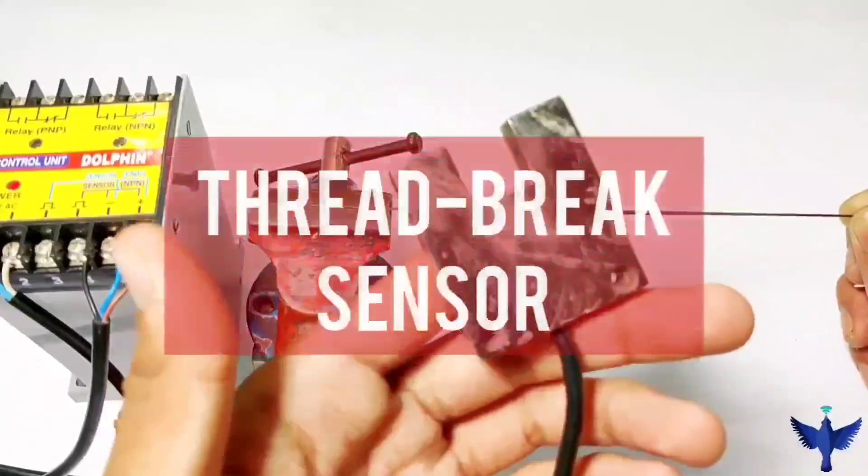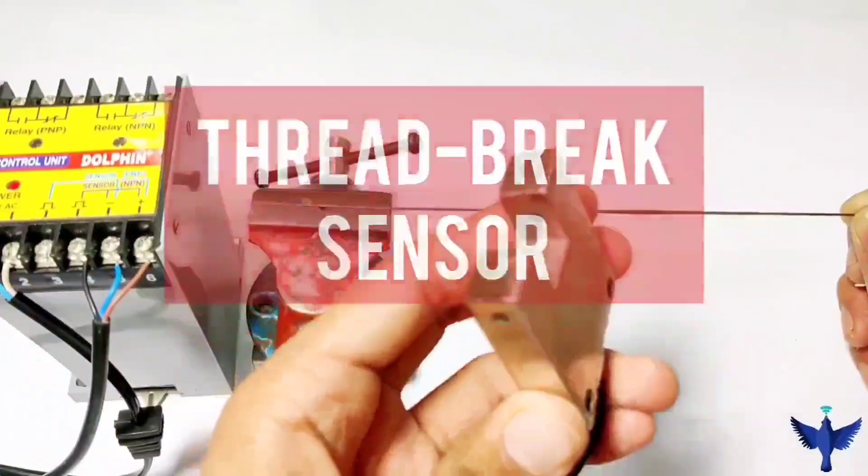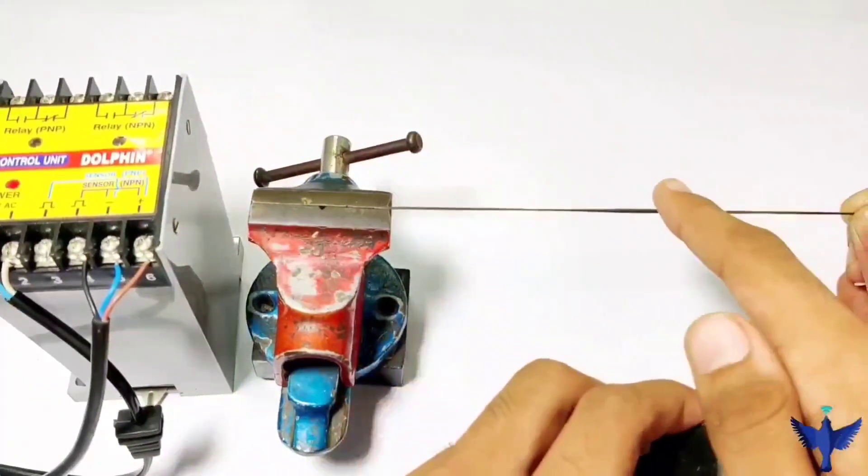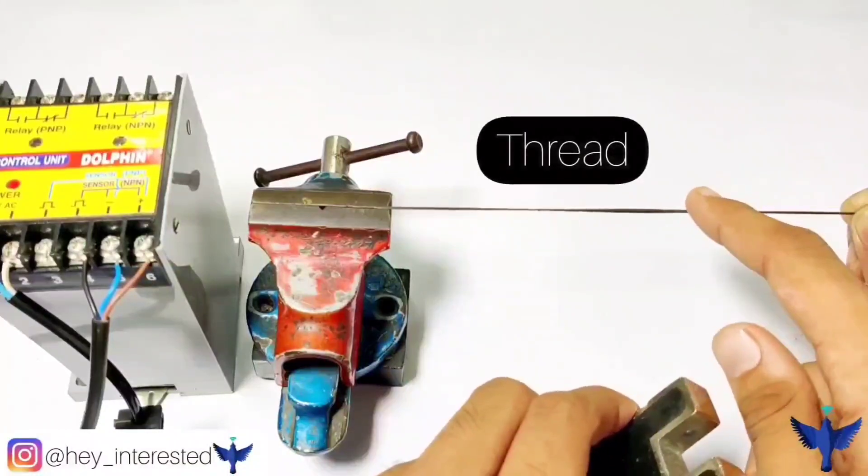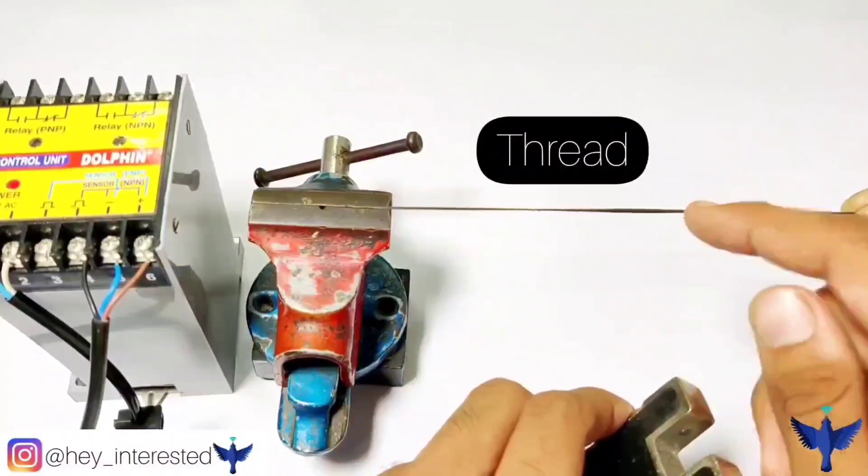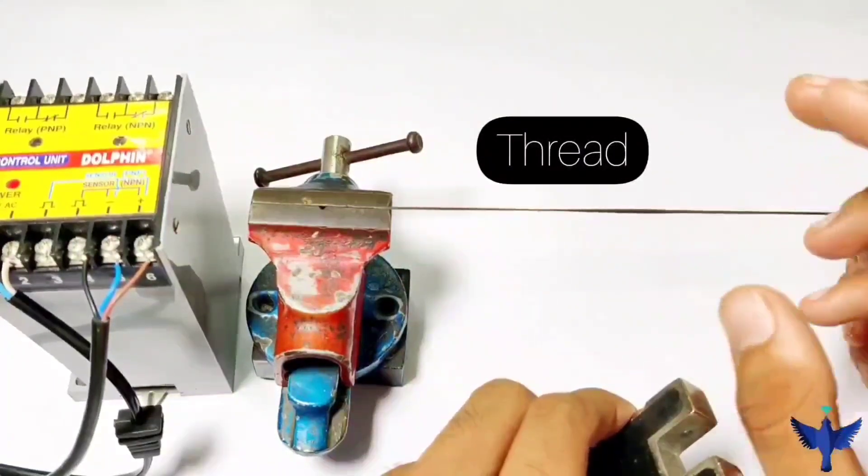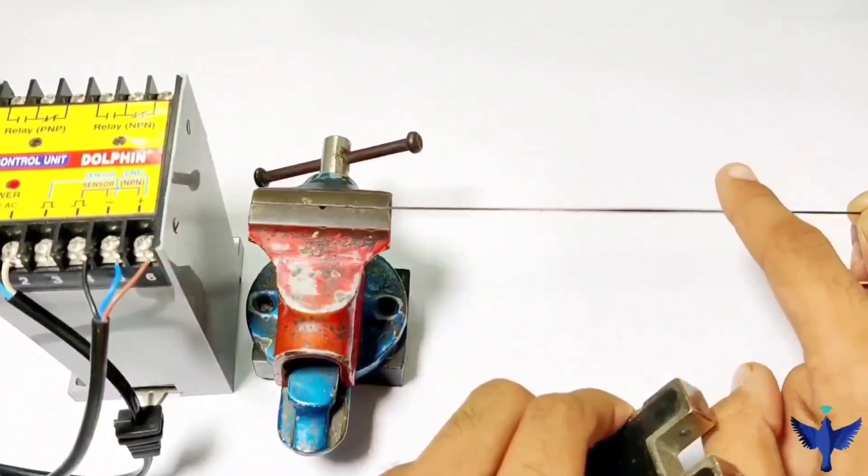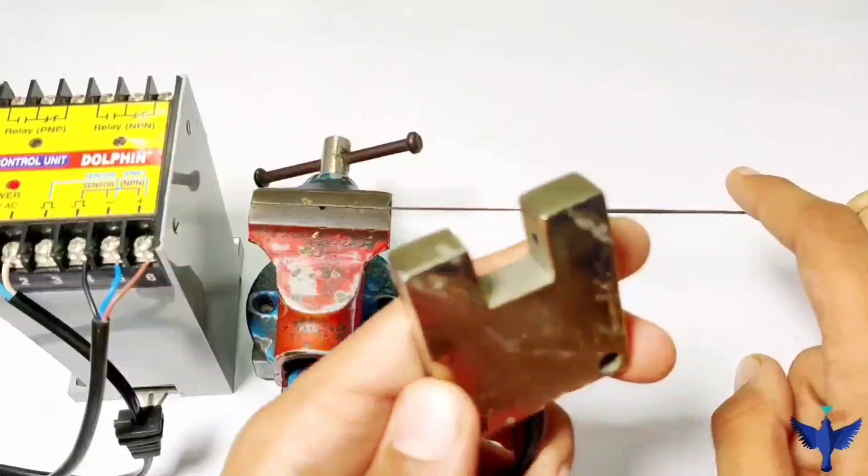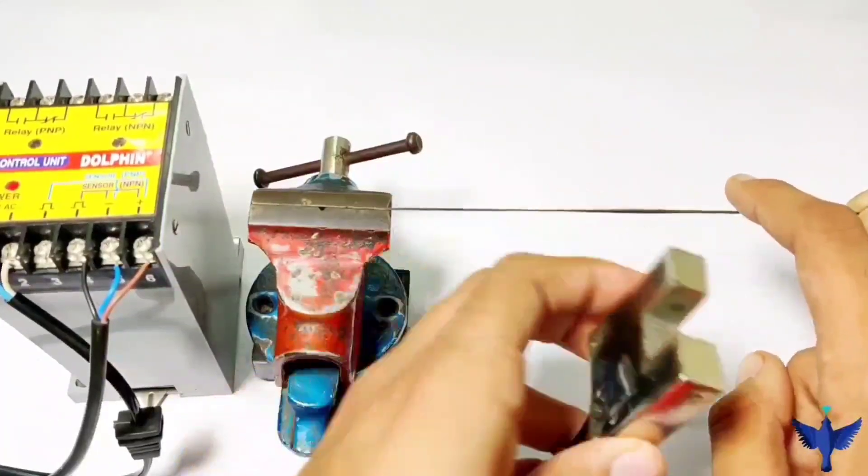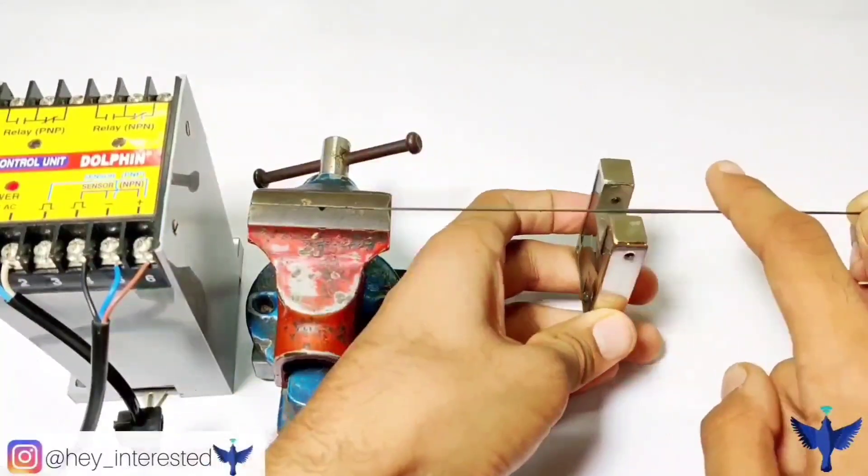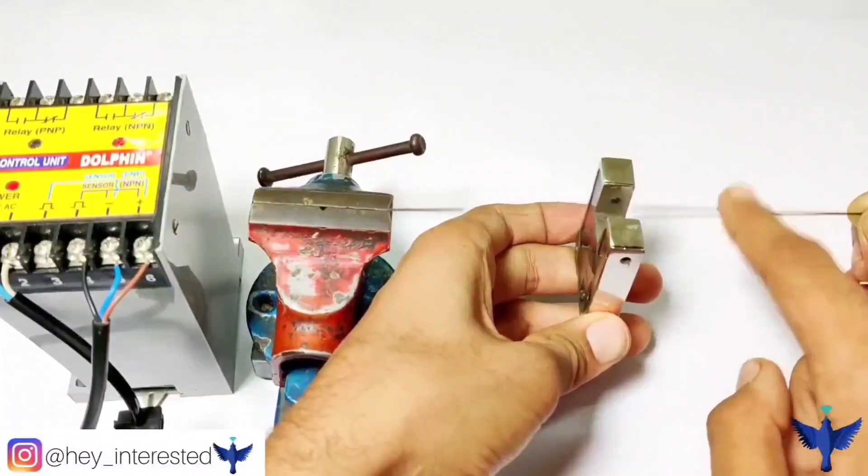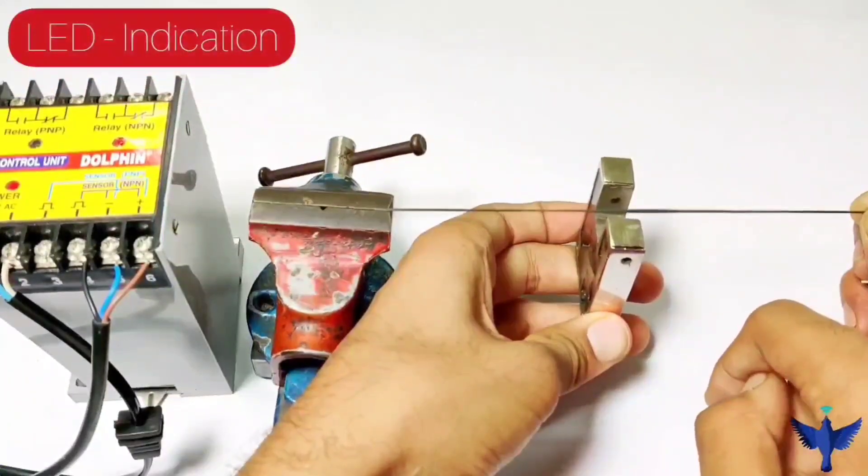This is my thread break sensor. Now I will show you the application. I'm assuming that this is my thread. When the thread moves and winds up the reel, it vibrates like this. In industry, it is the real application for that. I'll use this sensor to detect the thread. When I use it and make the vibrations, the sensor senses.